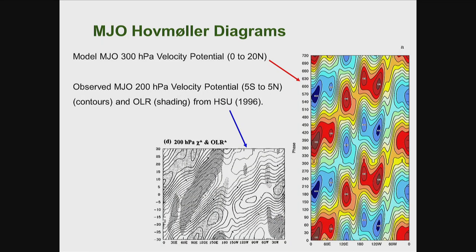This is a Hovmöller diagram for the 300-millibar velocity potential from 0 to 20 degrees latitude — time goes up and longitude is on the horizontal axis. You see the eastward propagation of the divergence field. Comparing with observations — a composite from observations — you see similarities in the propagation between theory and observation.